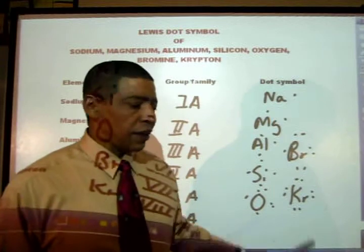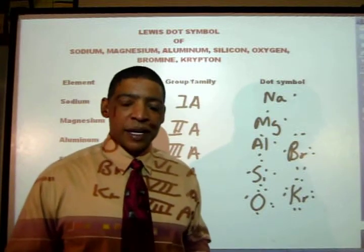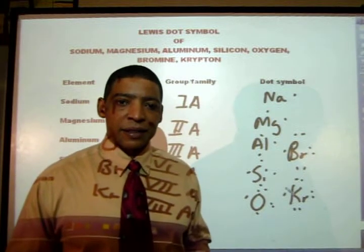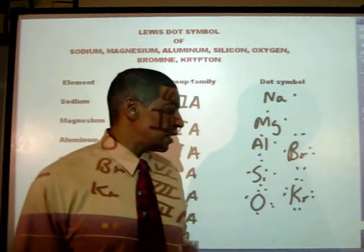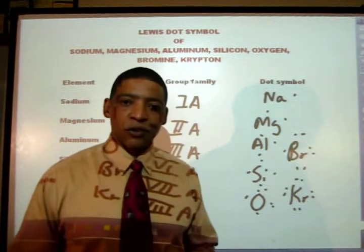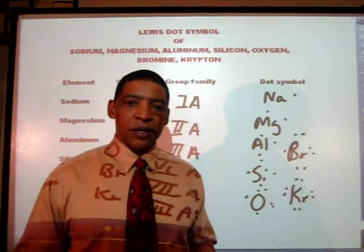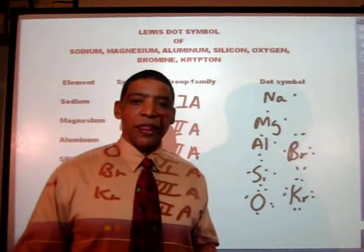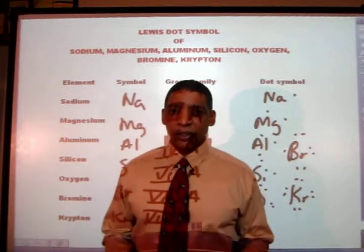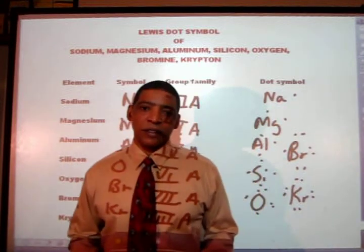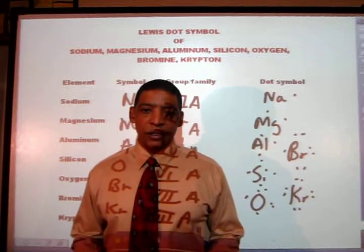Krypton, with its 8 dots, is expressing an octet. Since krypton has an octet of electrons, krypton is inert. Thus, group 8 or 18 elements are known as the noble or inert gases.